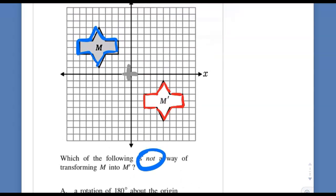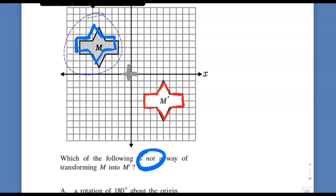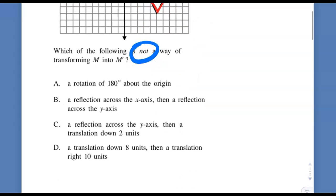A reflection across the y-axis and then a translation of 2 down. Let's see, if I was going to reflect this over the y-axis, I'd end up over here. And if I went down 2, I'd only be here. That one doesn't seem to work. I didn't get down far enough. I'm pretty sure that's the one that did not work.